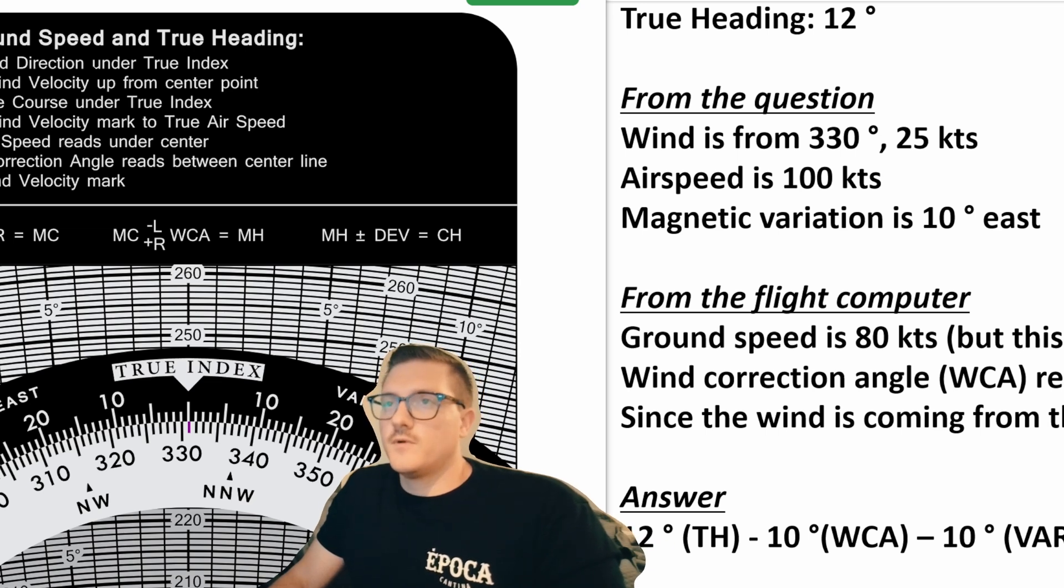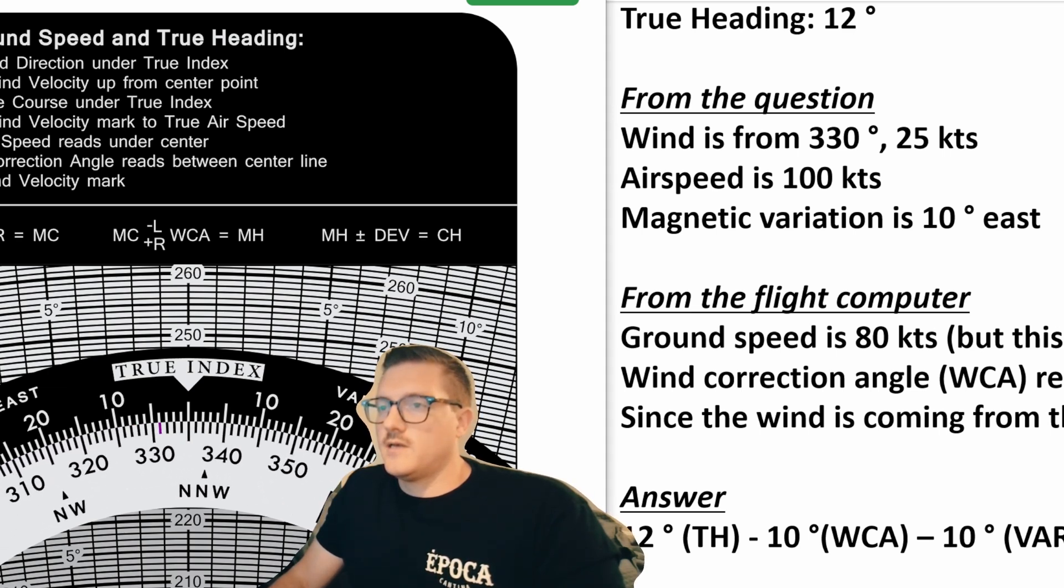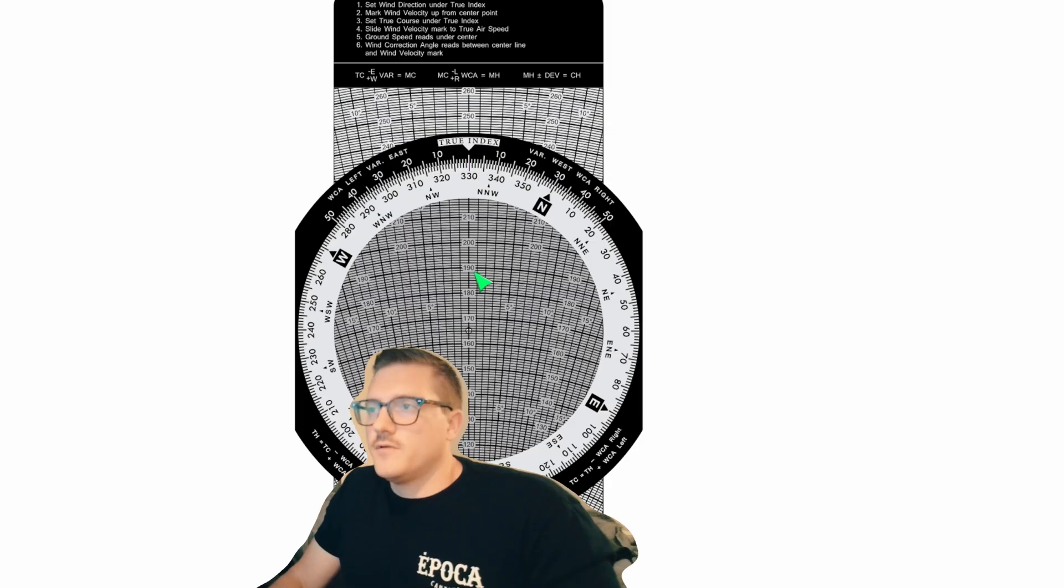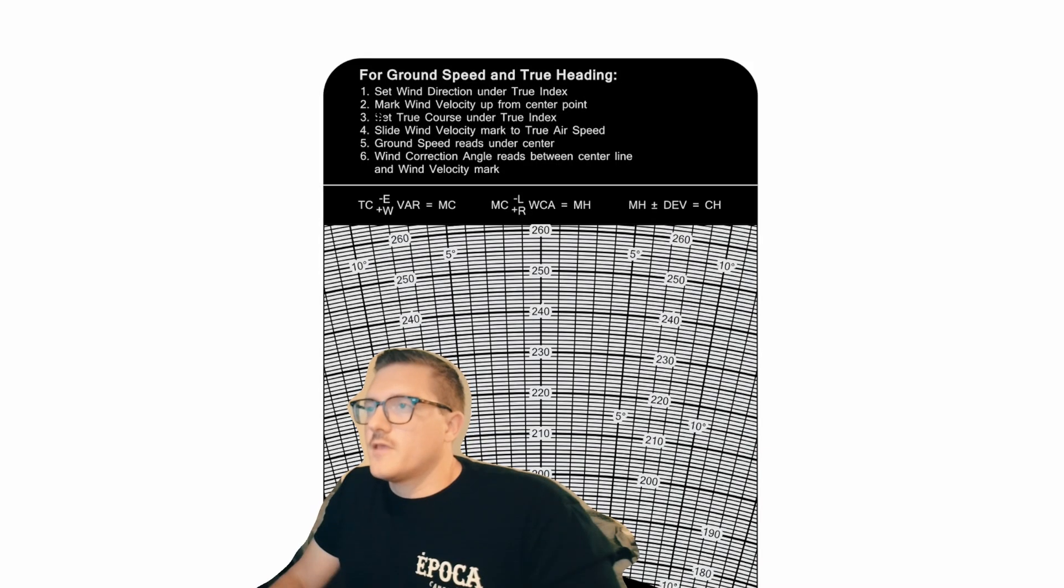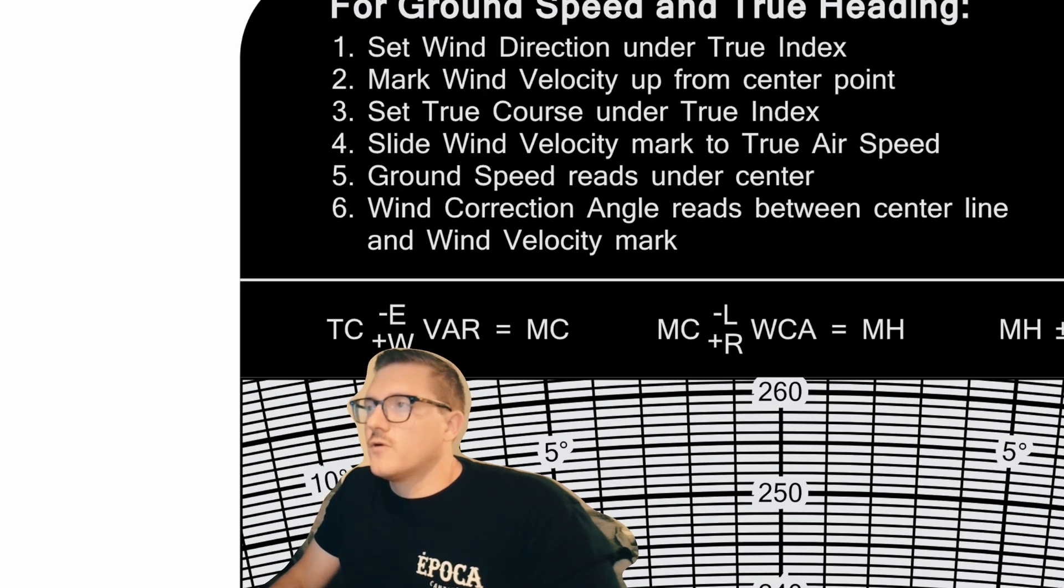So the first thing that we do on our E6B is we want to set the wind direction or the true index. So we can go ahead and make the true index 330. There we go, lined up right here. The second thing is mark the wind velocity up from the center point. So the wind velocity was 25 knots. What I like to do is put the grommet right on 100 and we'll put our marker right at 125.